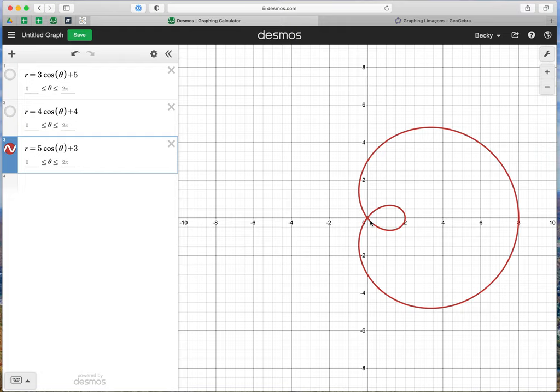Right now we're going to explore what happens. The first question that we were supposed to make a prediction about was what do you think will happen if we graph A sine theta plus D instead of A cosine theta plus D? These three graphs are all cosine graphs, and we notice that all of these graphs have the line of symmetry along the x-axis.